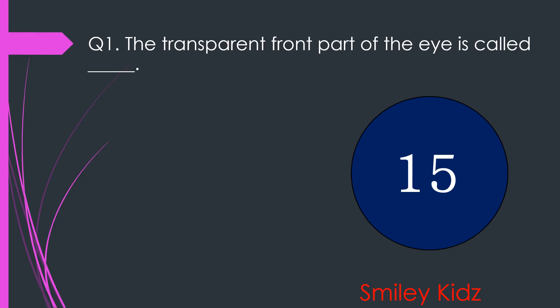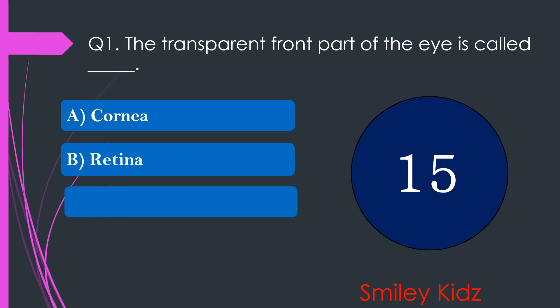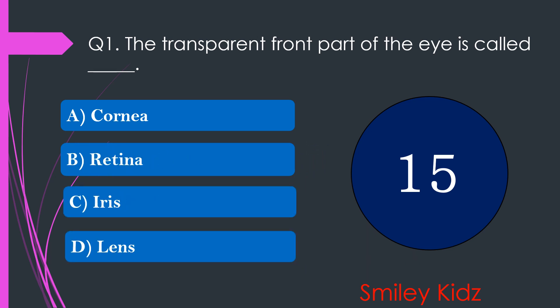Question number 1. The transparent front part of the eye is called dash. The options are A. Cornea, B. Retina, C. Iris, or D. Lens. Your time starts now.